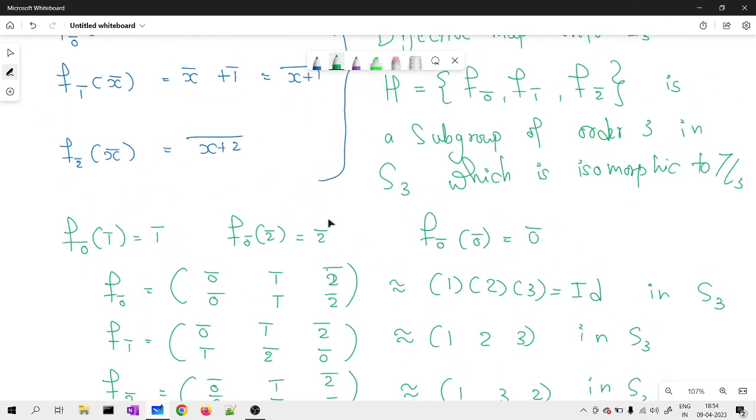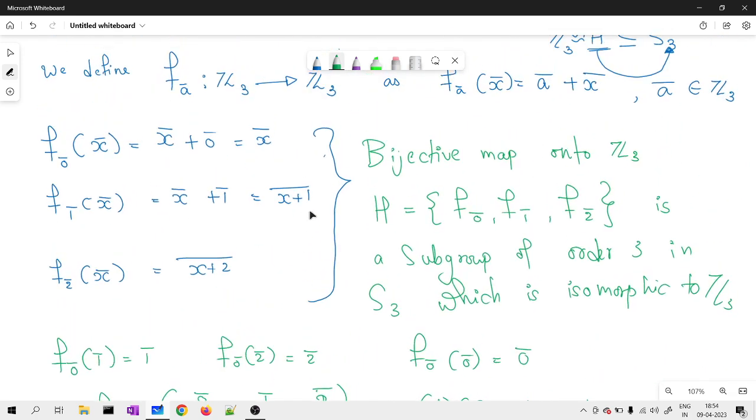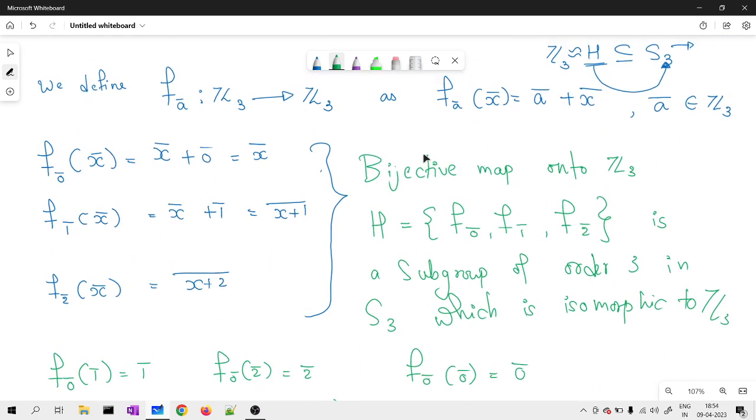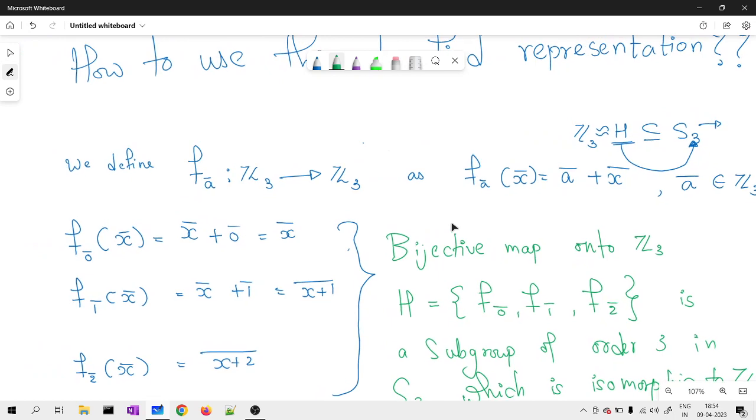Here we are using automorphisms from itself and they have some special name as well. But how are you defining? You are defining the map as every element will get added by that representative. And how many representatives you can take? You can take 3 representatives. I hope you understood the way to write the solutions.